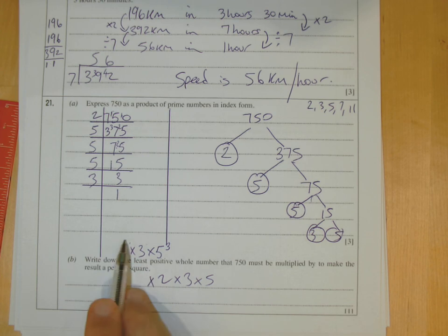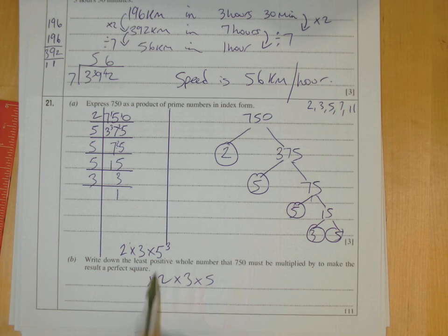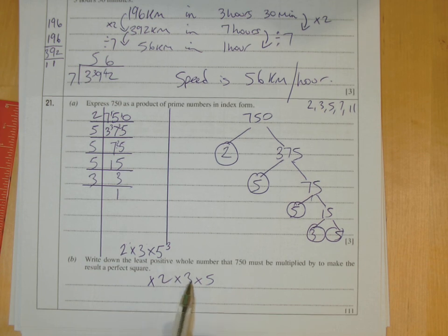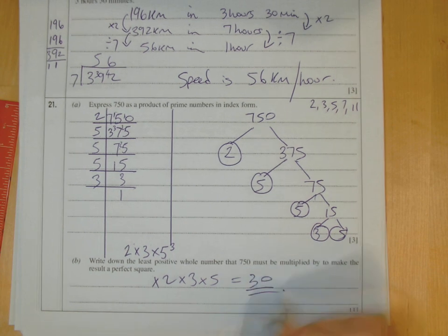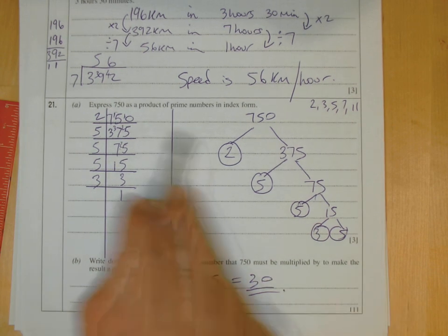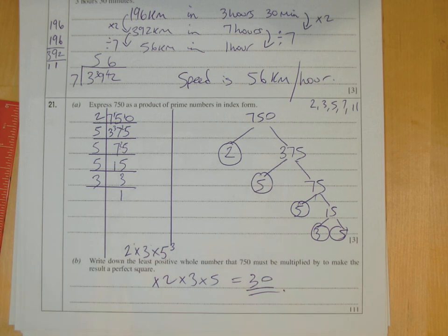So it says then, what must it be multiplied by? Well, it's all of this: 2 times 3 times 5. 2 times 3 is 6, times 5 is 30. 30. This bit can be challenging, but you know we should be trying to get marks, especially in part A here.